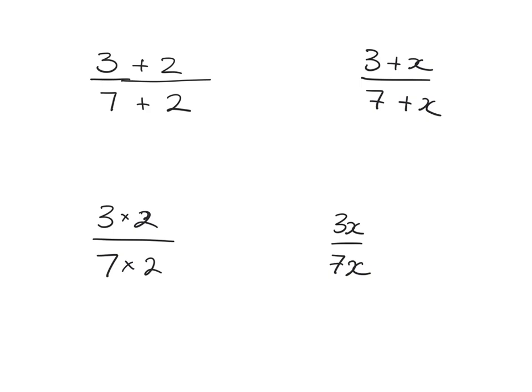To recap: if we multiply or divide the top and the bottom of a fraction by the same thing, we get equivalent fractions. For example, 3 times 2 over 7 times 2 is exactly the same as three-sevenths, because multiplying top and bottom by the same thing gives an equivalent fraction — we can just cancel the twos. This applies in algebra too: 3x over 7x, dividing top and bottom by x, gives the equivalent fraction three-sevenths.